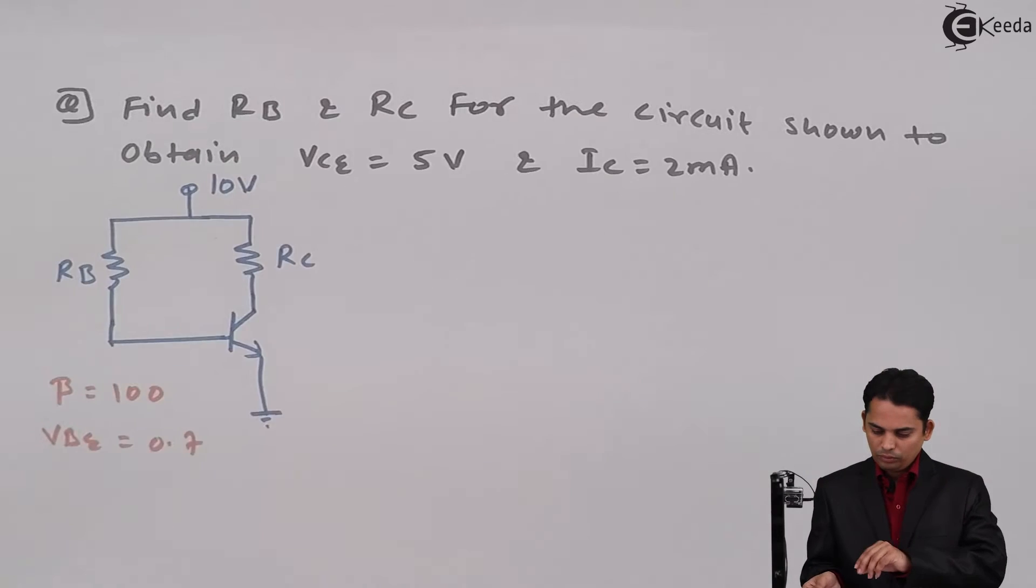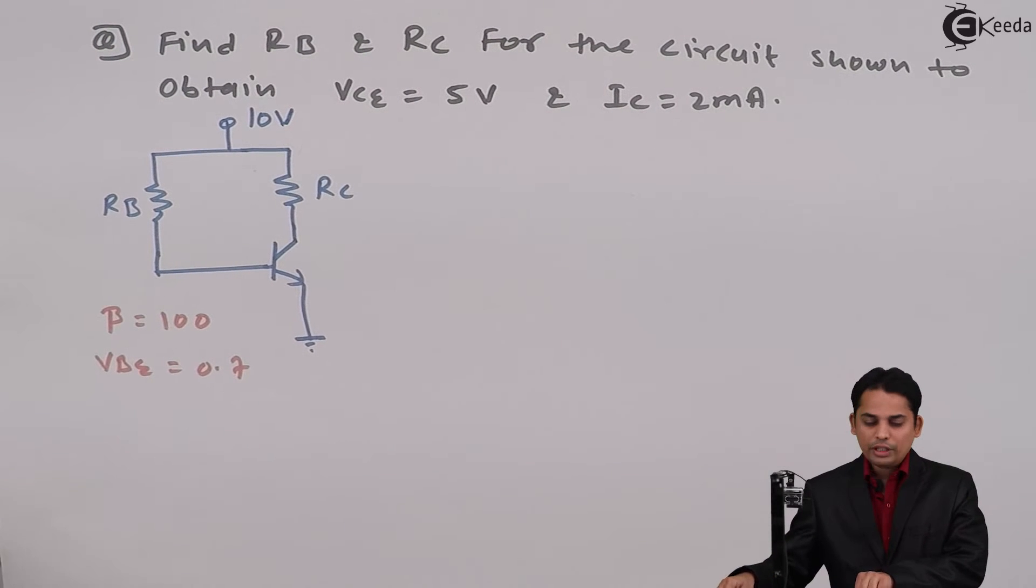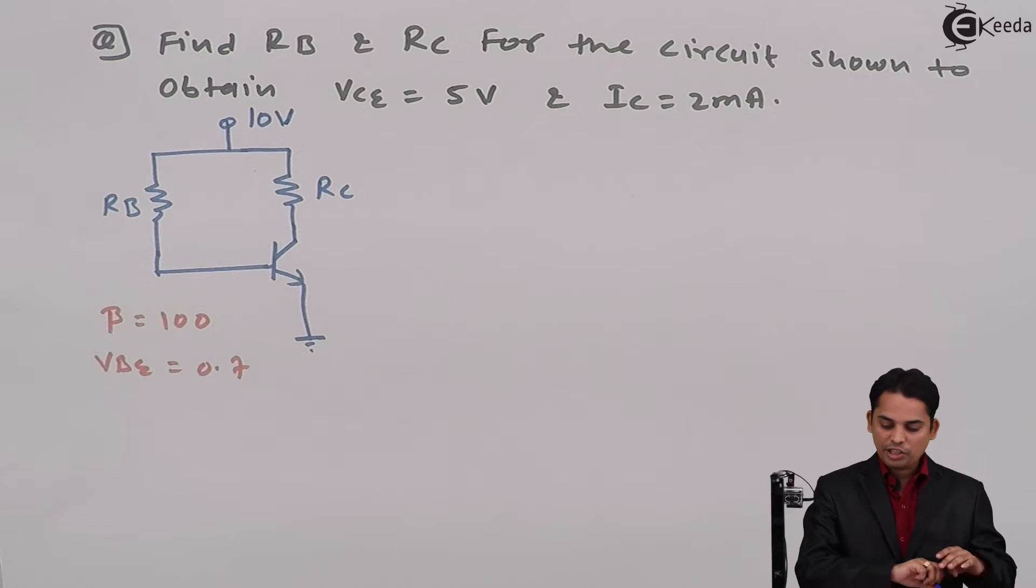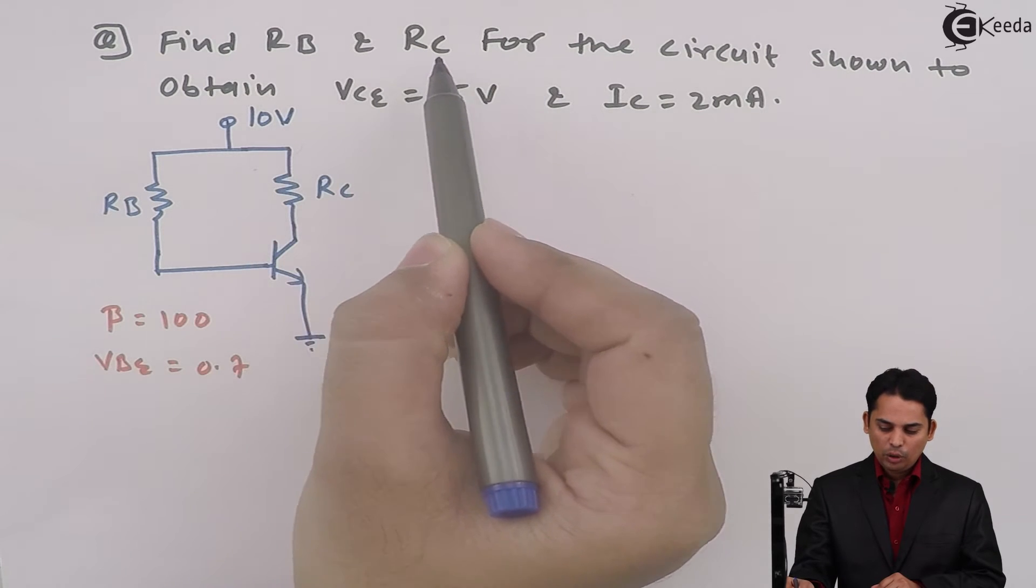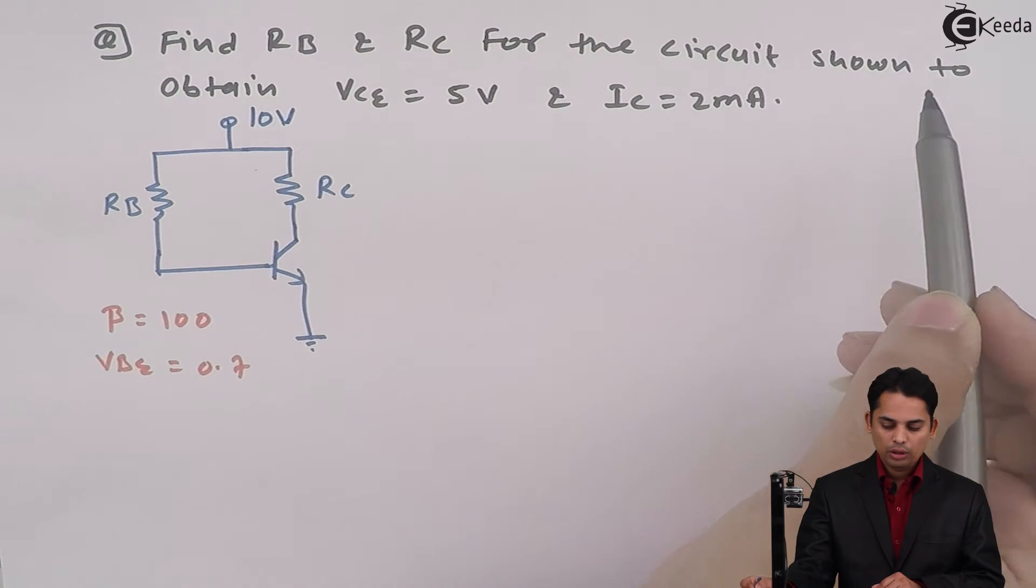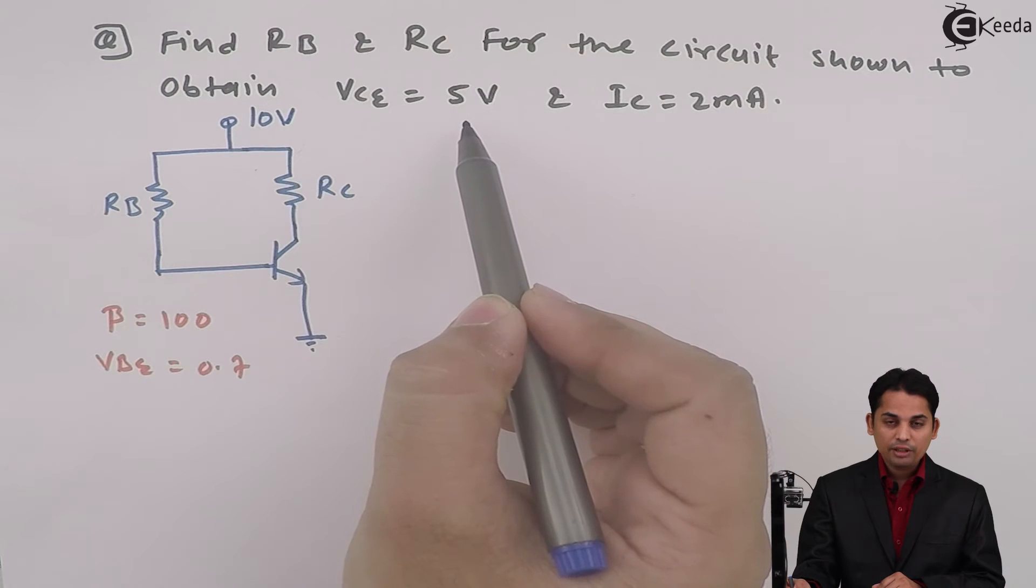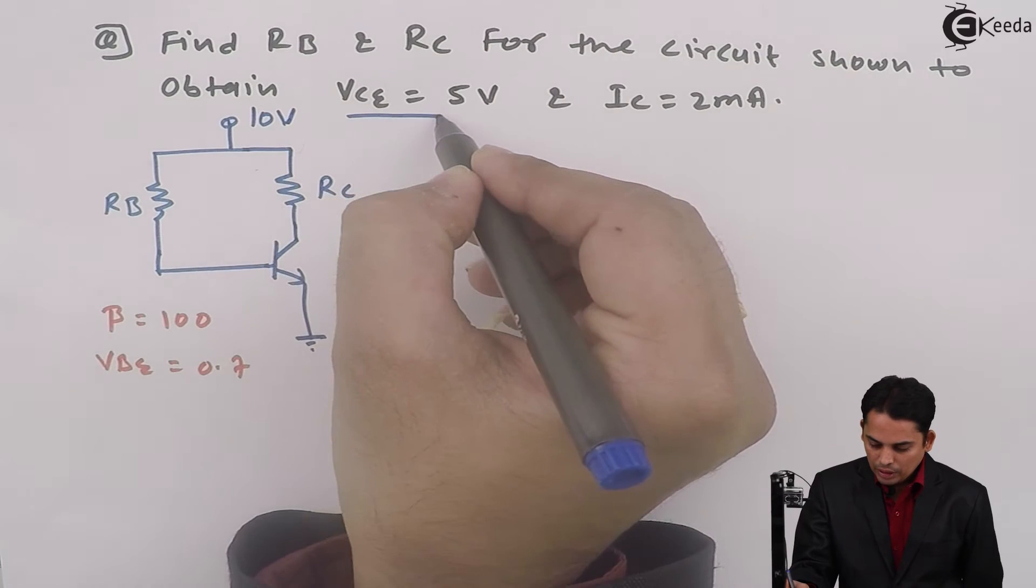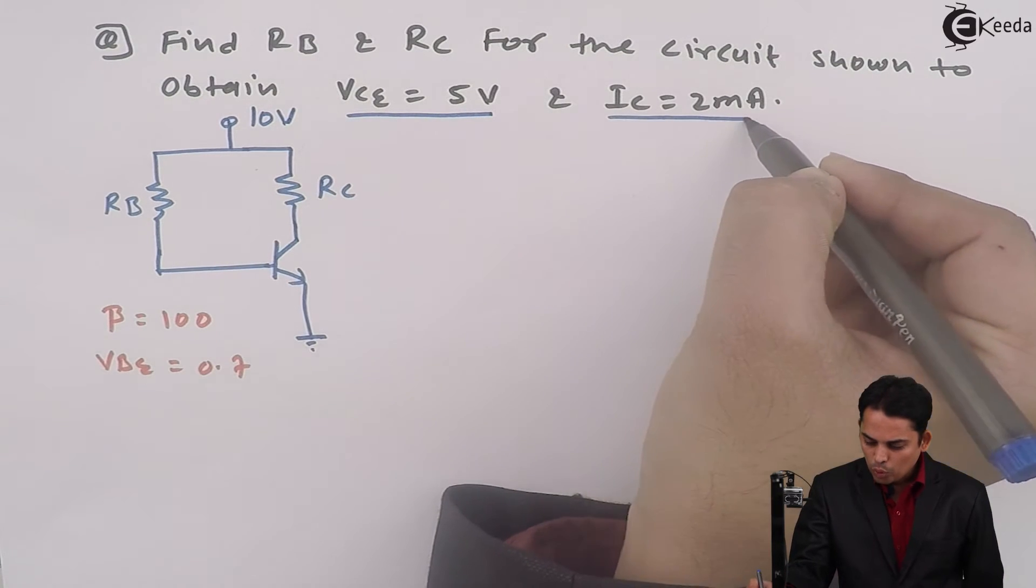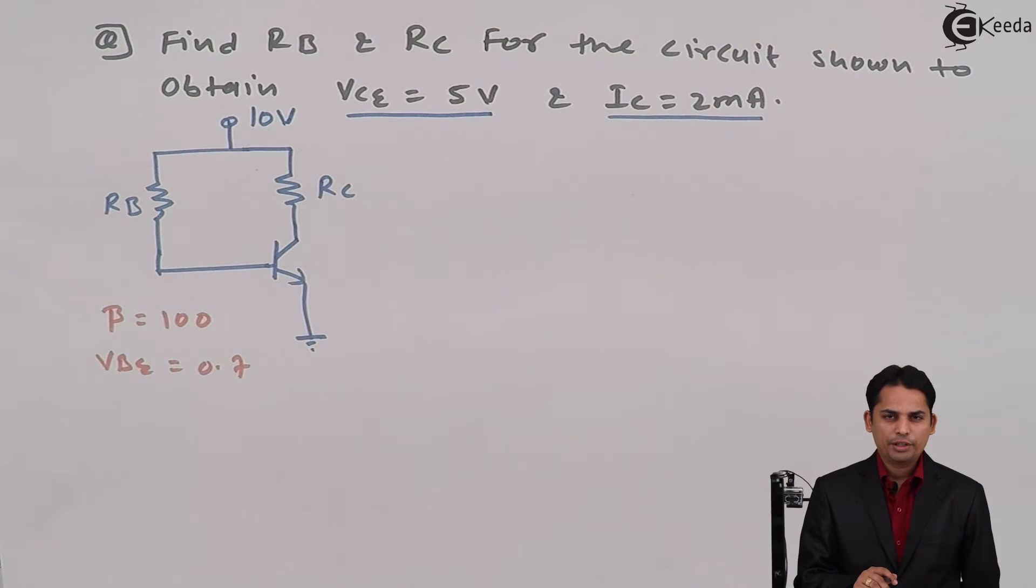In university question papers, they have asked this particular question. The question says: find value of RB and RC for the circuit shown to obtain VCE = 5 volts and IC = 2 milliamperes.